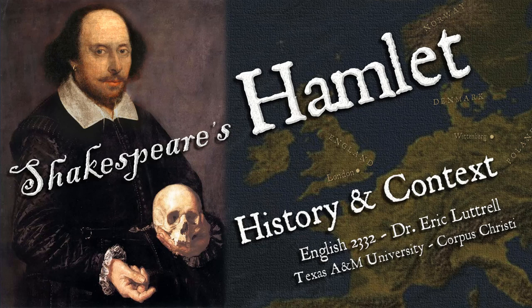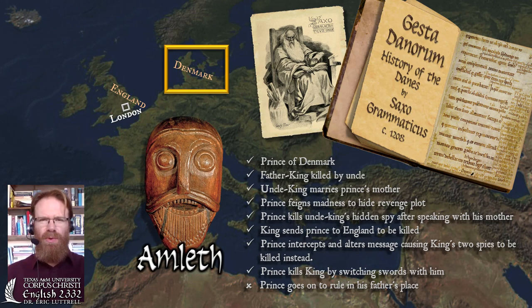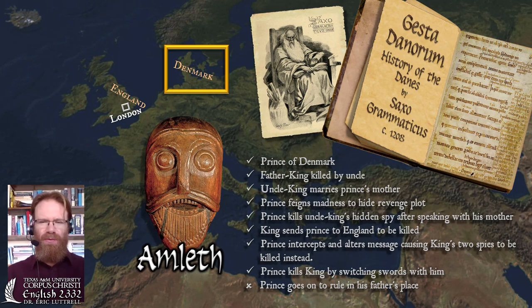"To be or not to be" — those might be the most recognizable words in English literature. But it's certainly not a quotation we would have heard from Amleth, the Viking prince in the History of the Danes by Saxo Grammaticus. And yet, if you've read Saxo, you'll see clear parallels that tell us that Amleth was the forerunner of Shakespeare's Hamlet.